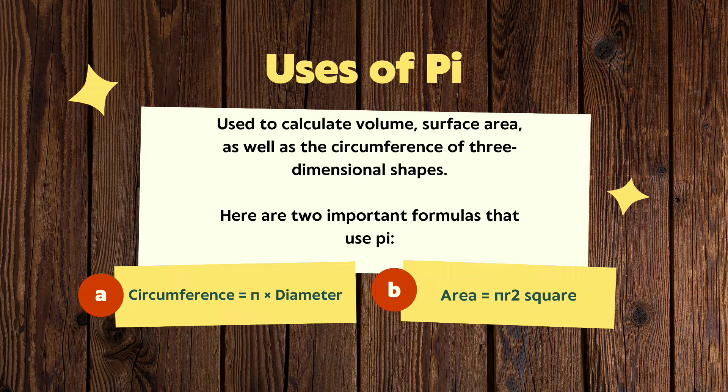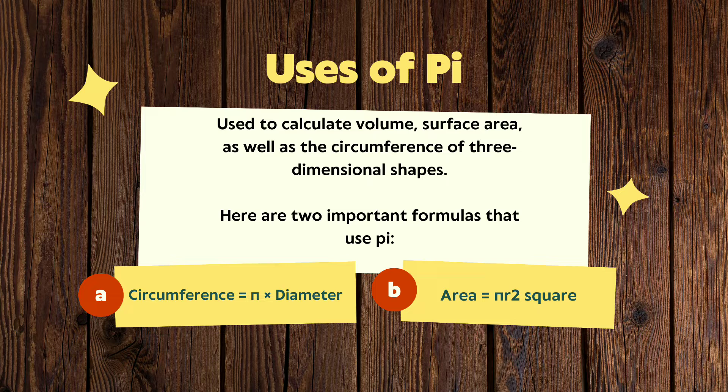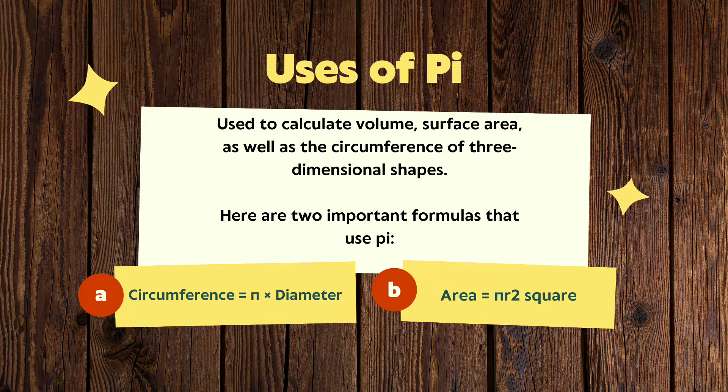The first one is used to calculate the circumference and it equals pi multiplied by diameter. And the other one is used to calculate the area of a circle and it equals pi r squared. In this way we can calculate circumference and area of a circle.